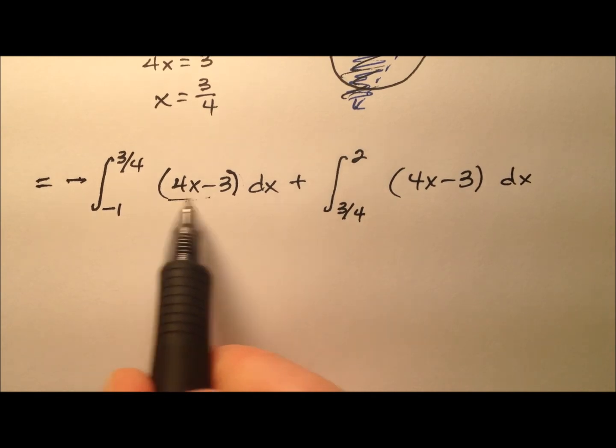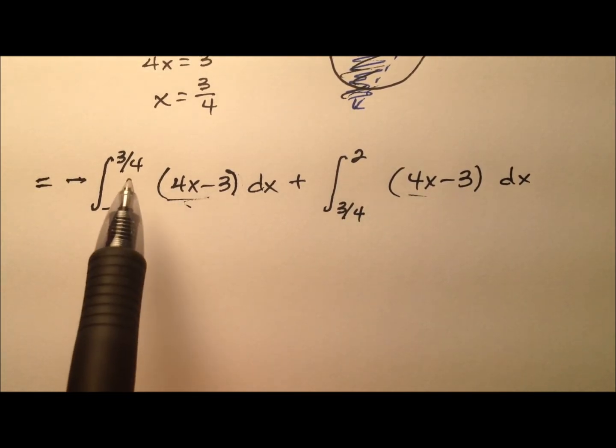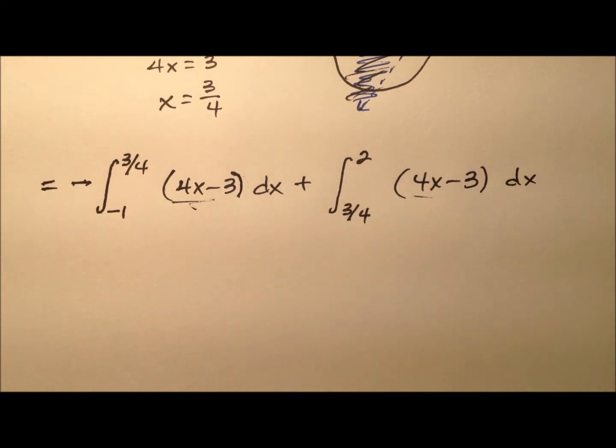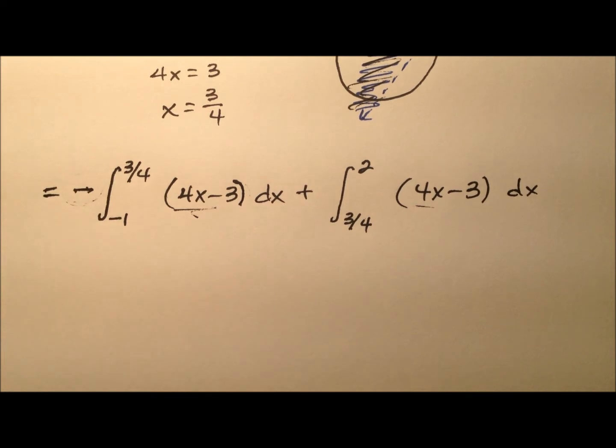So you'll see, of course, both of these integrals are the same, 4x minus 3, but we're just using different limits of integration here. And the part of the graph that was going to be negative, we went ahead and put a negative out front to force it to be positive.